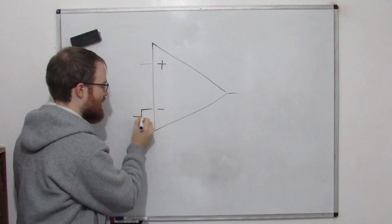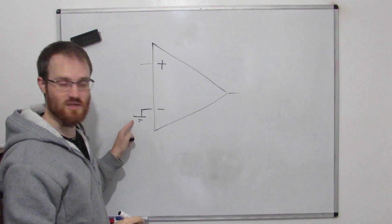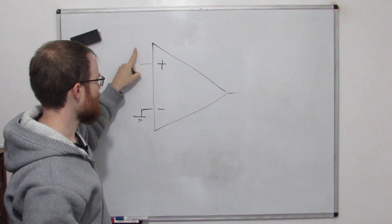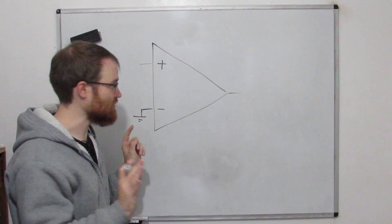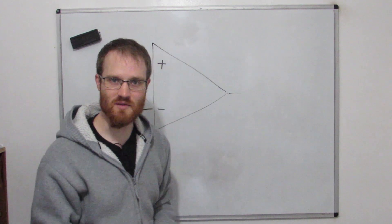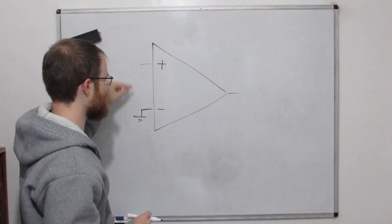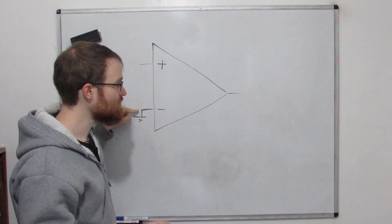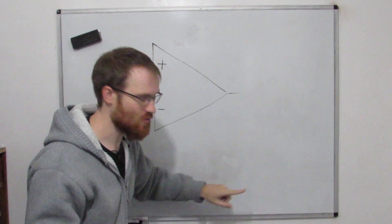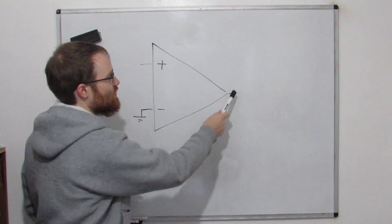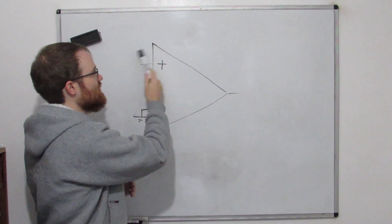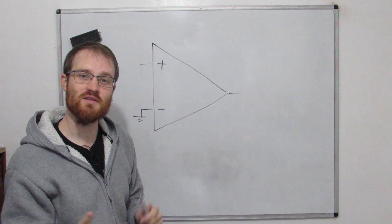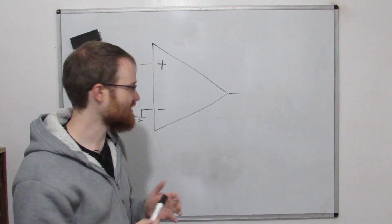If we ground one input so it's at zero volts, and the other input goes higher than zero volts at all, the output will go all the way up to the positive supply. If this input goes below zero volts, the output will go all the way to the negative supply. So the output follows the polarity of the signal on this input — that's why we call it the non-inverting input, because it doesn't invert the signal.